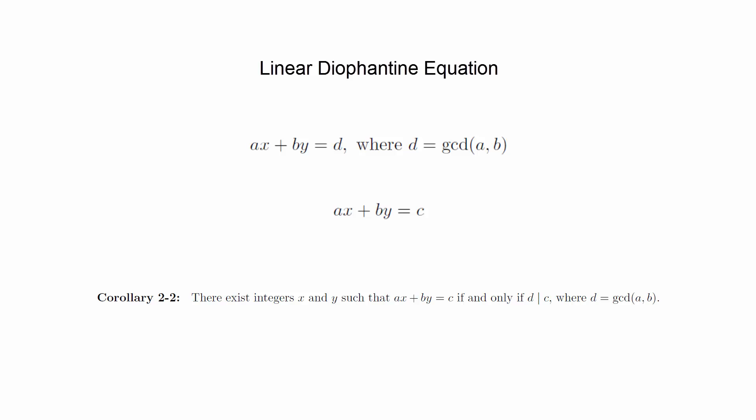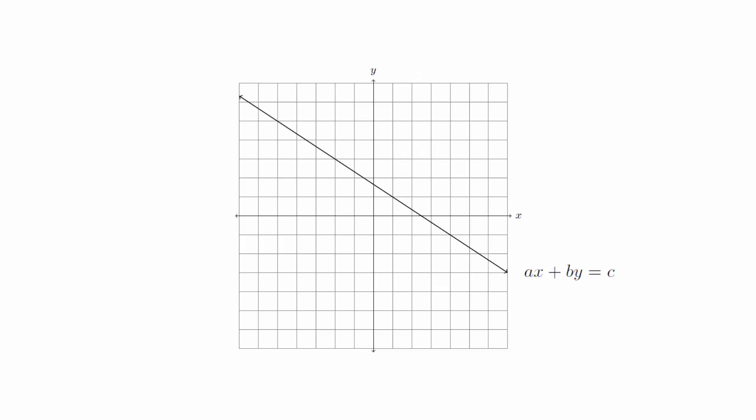We can look at this problem from the perspective of the Cartesian plane. The equation ax plus by equals c is the equation of a line. The points x comma y, where x and y are integers, are lattice points on the plane. The question of finding solutions to the linear Diophantine equation is the same as trying to find points where the line crosses lattice points. Depending on the specific values of the parameters, there may be no lattice points, or there may be infinitely many.